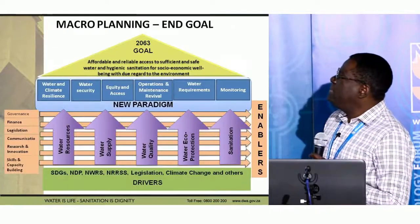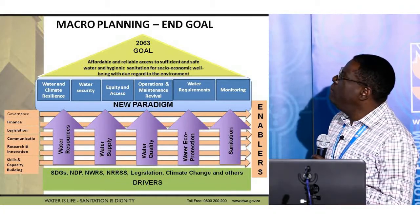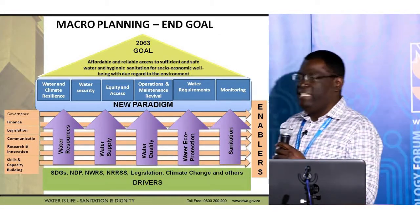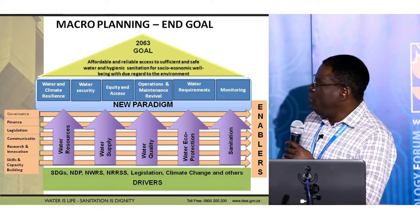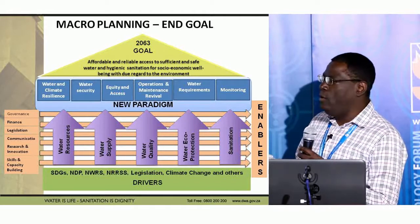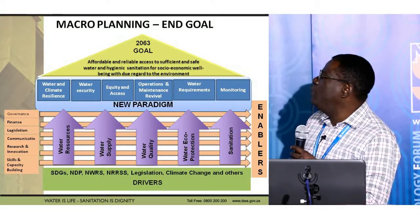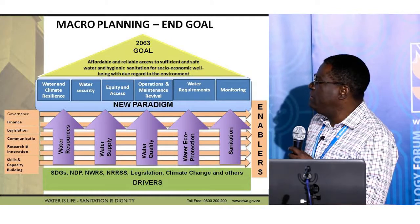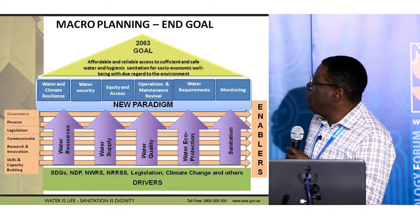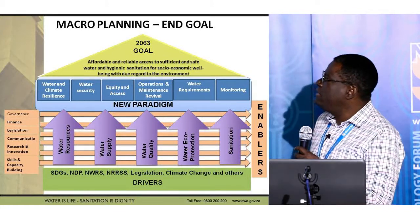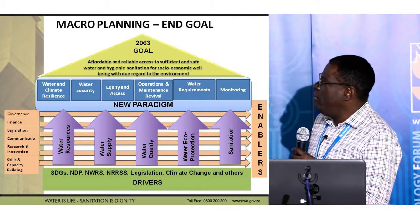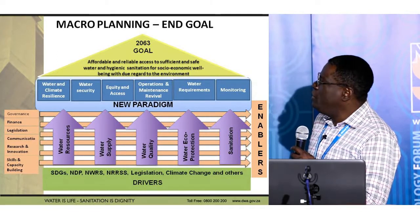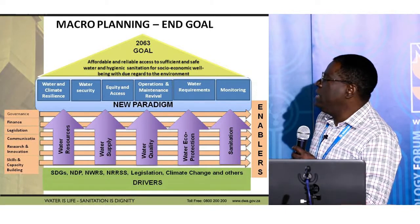From our strategy, one of the things we have been doing is moving to a master plan. This is one of the first times since 1994 — and since our new National Water Act in 1998 — that we have translated the strategy into an operational plan for implementing our activities. We recognize the drivers: the SDGs, our NDP, legislation, and climate change issues. Critically, there are a number of enablers — governance issues, financial constraints, communication, which is a major problem, and skills and capacity building.